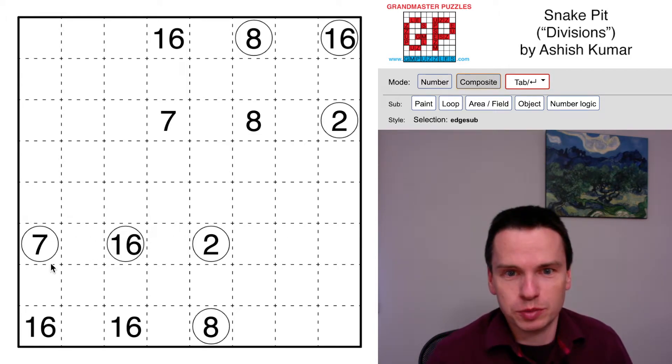So we're here to solve the Snake Pit by Ashish Kumar called Divisions, with a division of six clues in the lower left and another two by three division in the upper right. What's interesting about them are a few things.